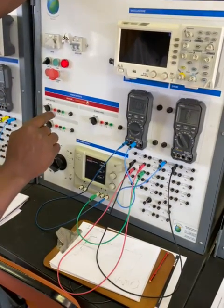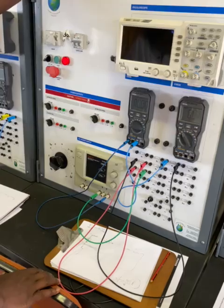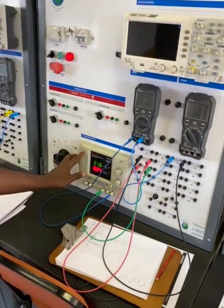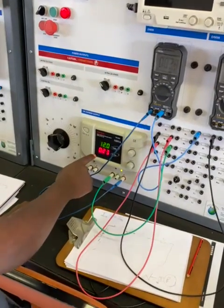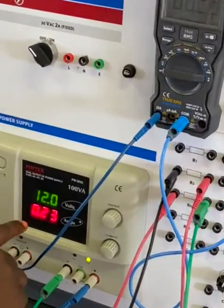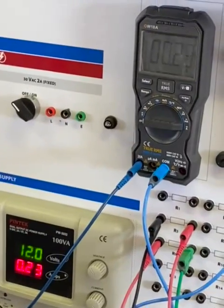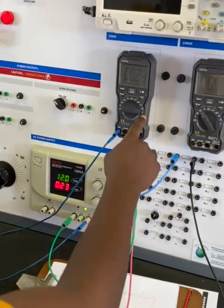Then we can switch this on. You will see immediately here that we are getting our total current which we calculated. And I want you also to notice that we are on the ampere scale here, not the milli.